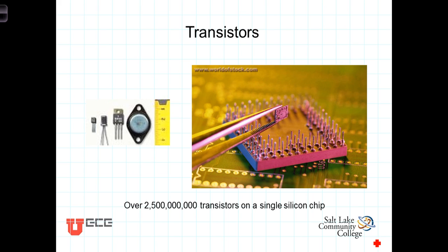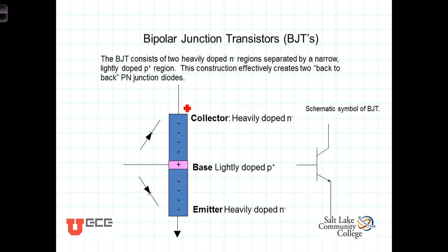The bipolar junction transistor, or BJT, is typically a three-terminal device with terminals labeled collector, base, and emitter. The collector and the emitter are heavily doped — in the case of the NPN transistor, heavily doped with N-type dopants. The base, on the other hand, is very narrow and lightly doped with a P-type dopant. This construction effectively gives us two P-N junctions, effectively two diodes, with the base having the positive terminal of both of them.